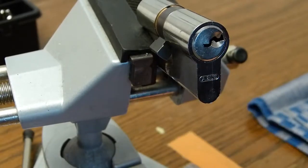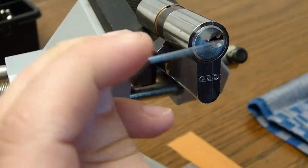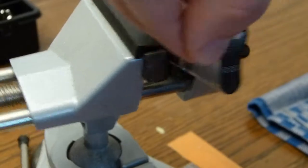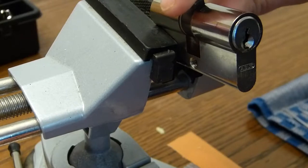This is the standard impressioning lock. As you can see I've picked it now. Rotate it all the way. Now the tailpiece is stuck.